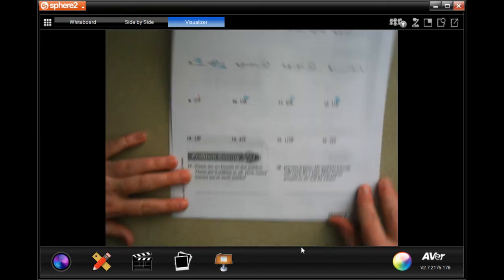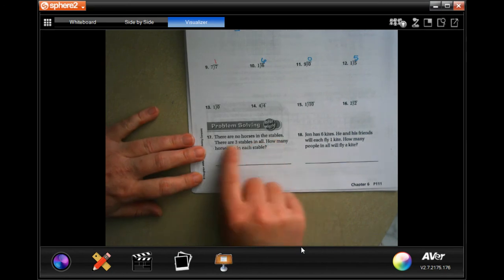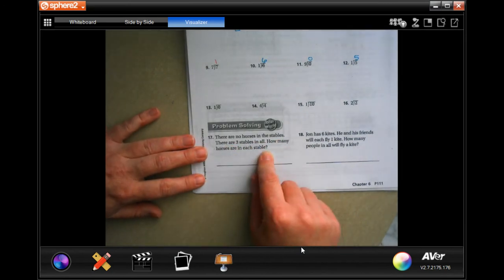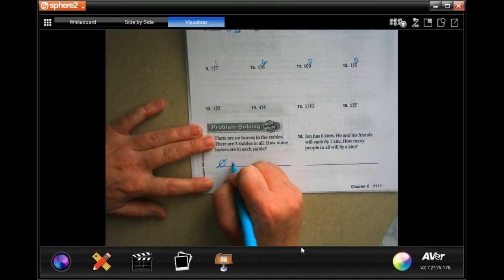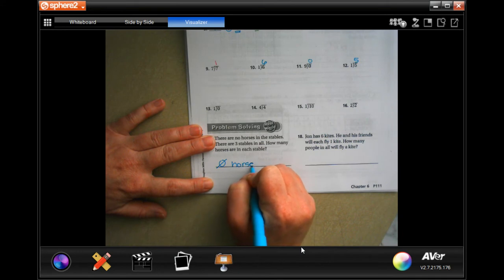There are no horses in the stables. There are three stables in all. How many horses are in each stable? Well, that's just going to be 0 horses. It says there are no horses.